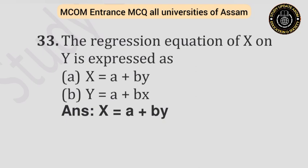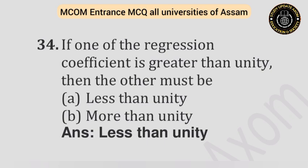Question number thirty-three: The regression equation of X on Y is expressed as — Option A: X = A + BY. Option B: Y = A + BX. Answer is X = A + BY. Question number thirty-four: If one of the regression coefficients is greater than unity, then the other must be — Option A: Less than unity. Option B: More than unity. Answer is less than unity.